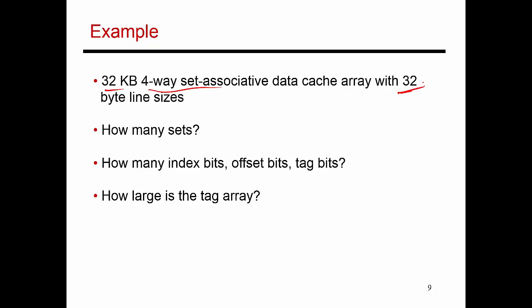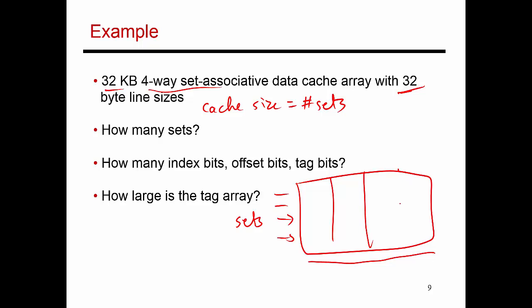Here's an equation for cache size. My cache size is a function of how many rows I have, which is the number of sets, times the width of every single row. And the width of every row is a function of the number of ways and the size of each way. So, number of sets times number of ways times the size of each way, which is my block size.